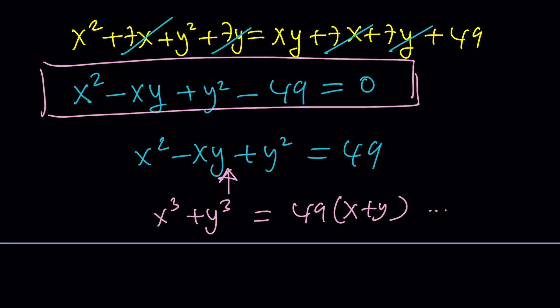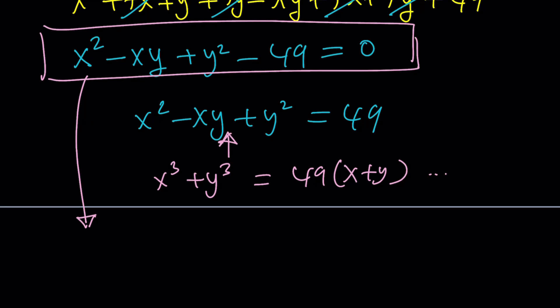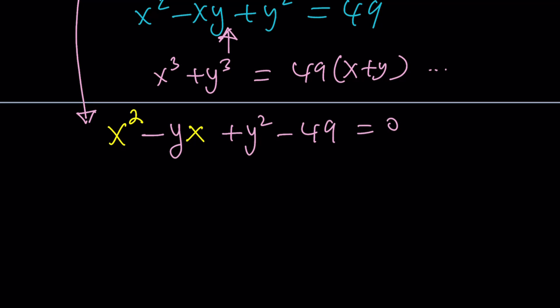So that's our Diophantine equation, and we're going to be solving it using a very interesting method which is commonly used with Diophantine equations. And that is turning this into a quadratic equation. Notice that we can write this as a quadratic in x or y, it doesn't matter. Let's go ahead and write it as a quadratic in x. So I'm going to write this as x squared minus yx. I'm trying to basically emphasize the fact that this is going to be quadratic in x.